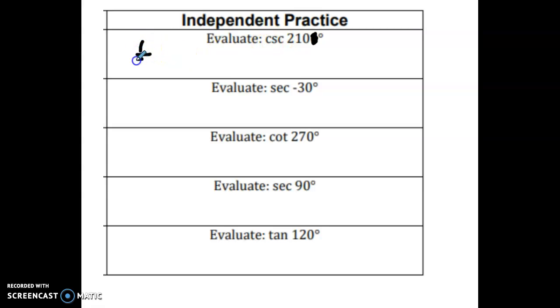Cosecant is the same as the inverse of the sine. So I write 1 over the sine of theta, which then tells me that I'm going to take the sine and do the inverse of that. So I find 210 degrees, just like we did in the guided practice. Its coordinates are negative square root of 3 over 2 and negative 1 half. I want the sine, so negative 1 half, but I want the inverse of that. So I want 1 over negative 1 half, which is just the reciprocal of that bottom fraction, which then just becomes a negative 2.